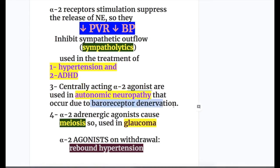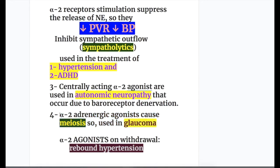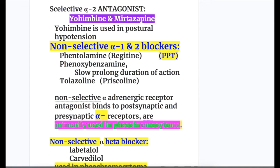Alpha-2 agonists cause miosis, so they are used in glaucoma. Remember: alpha-1 causes pupillary dilation, whereas alpha-2 stimulation causes miosis. On withdrawal, alpha-2 agonists such as clonidine may produce rebound hypertension — they normally produce hypotension, so they are used in hypertension, but withdrawal can cause rebound hypertension.